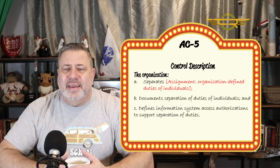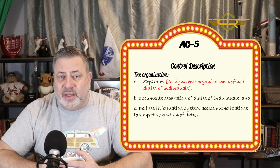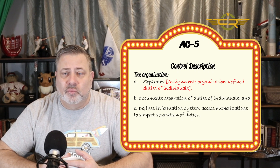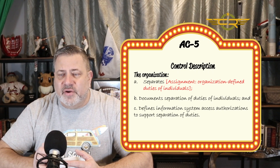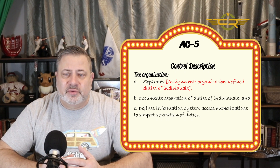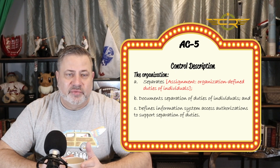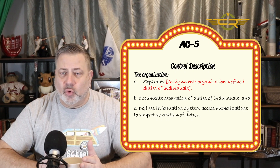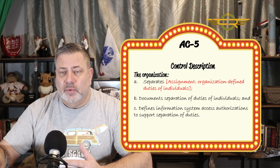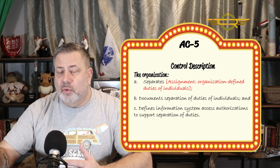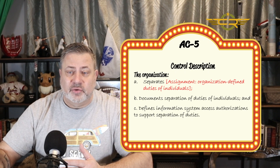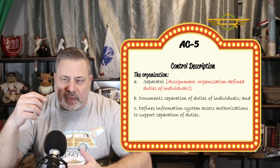First of all, it's one of the shorter controls in the access control family. It's very specific about what it does. The control description states the organization separates — and again, we've got square brackets. Anytime we have square brackets, we have to define something: assign a value or make a selection. In this case, we're assigning a value.